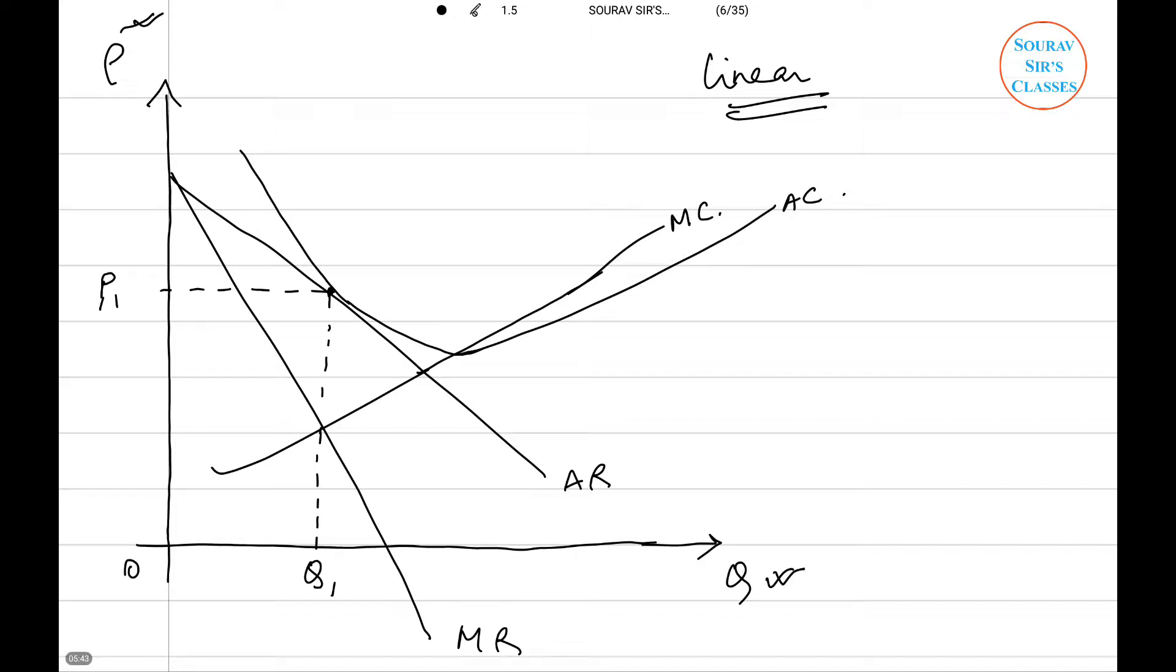In the short run if you have supernormal profit, you being a firm will enter the market. So there will be entry. However, if there is loss in the short run there will be exit.